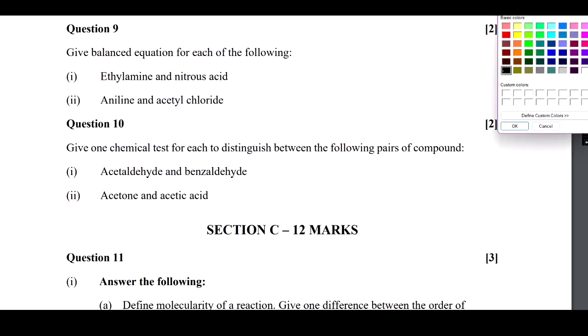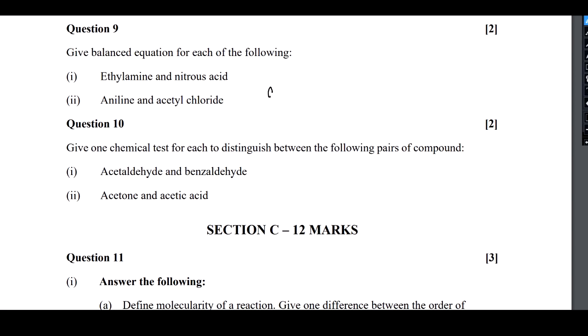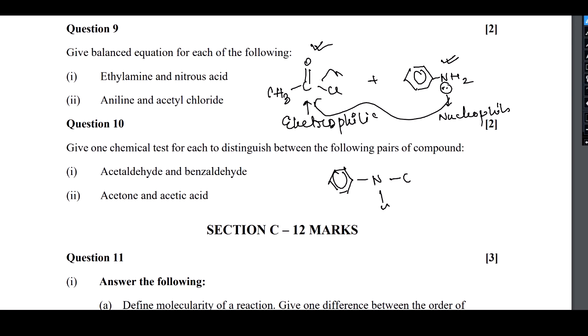Coming for the next question: aniline and acetyl chloride. This is also very easy. Acetyl chloride is CH3COCl. Aniline is benzene group with amine. Again, amine has lone pair, so this is the nucleophilic side. This carbon is attached with oxygen as well as chlorine, so this is the electrophilic, electron deficient side. This one is electron rich, this is electron deficient. So it will get attacked, chlorine will come out, and formation of acetanilide will happen.